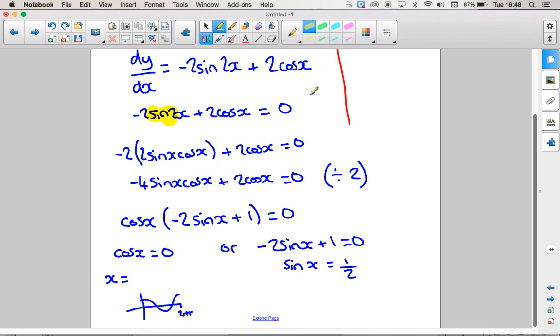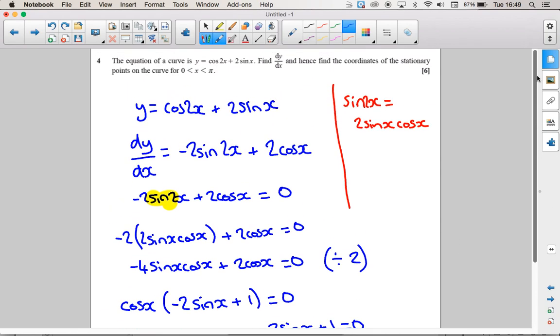It's 0 here and here. So that is at pi over 2 and 3 pi over 2. But if we look at the range of values that we want our answer between, we just want it between 0 and pi.